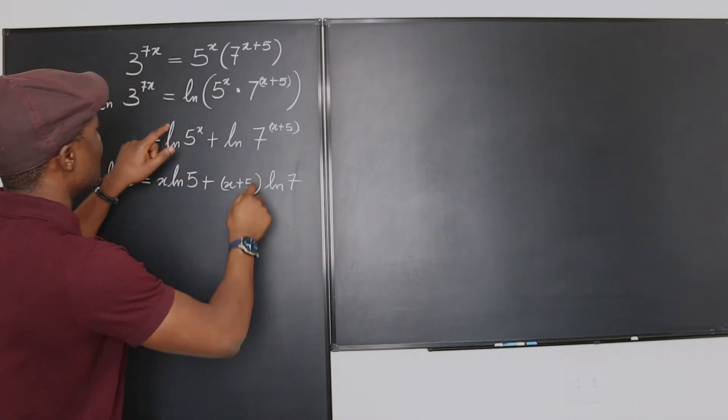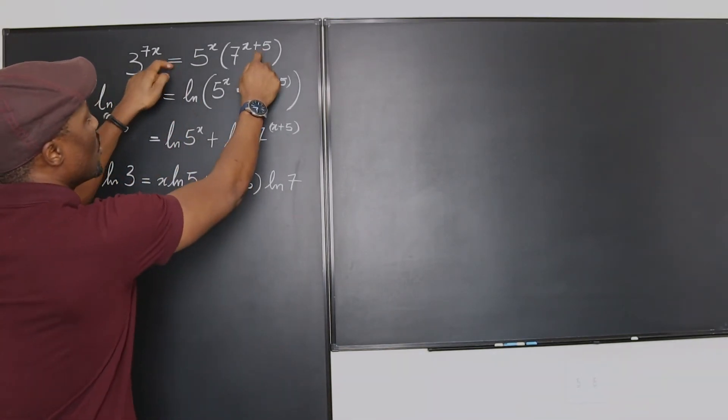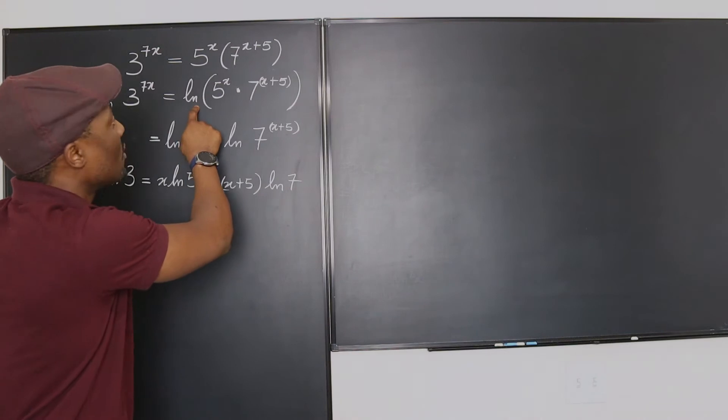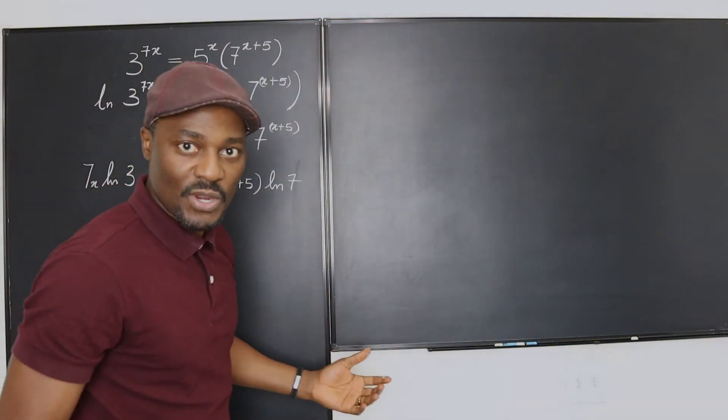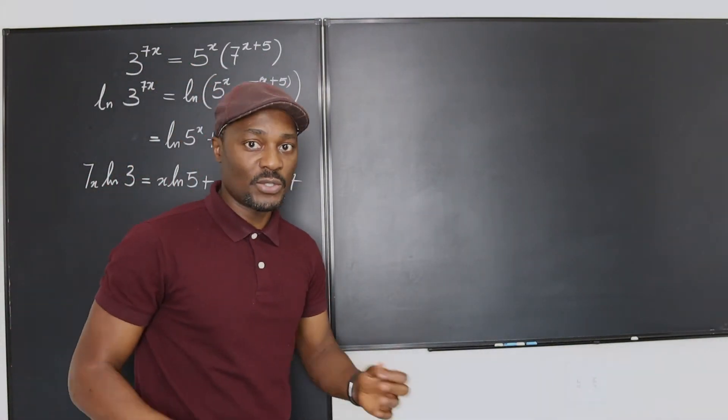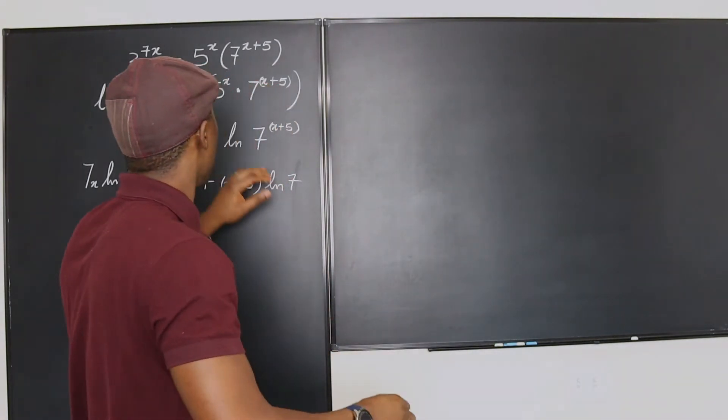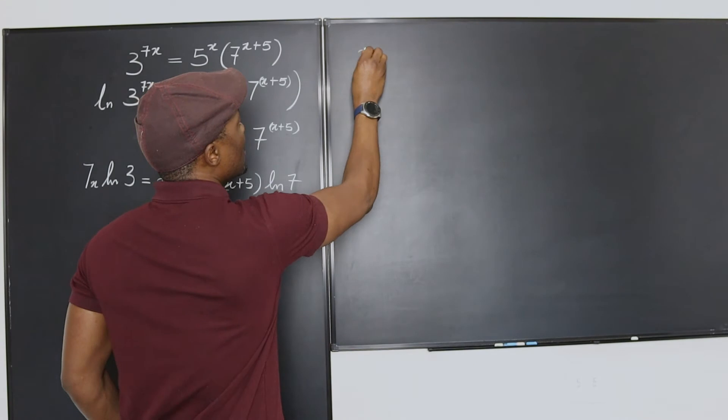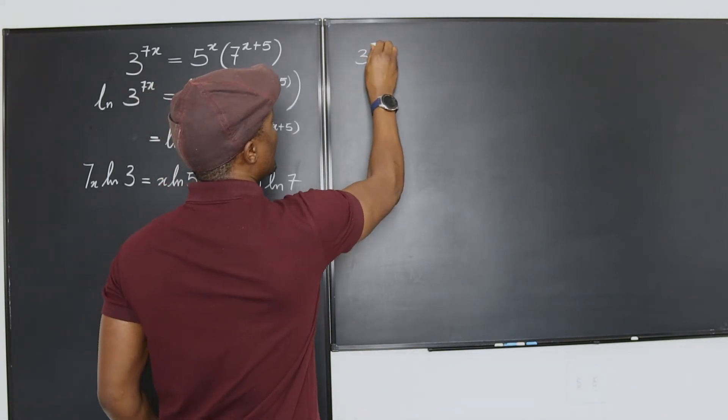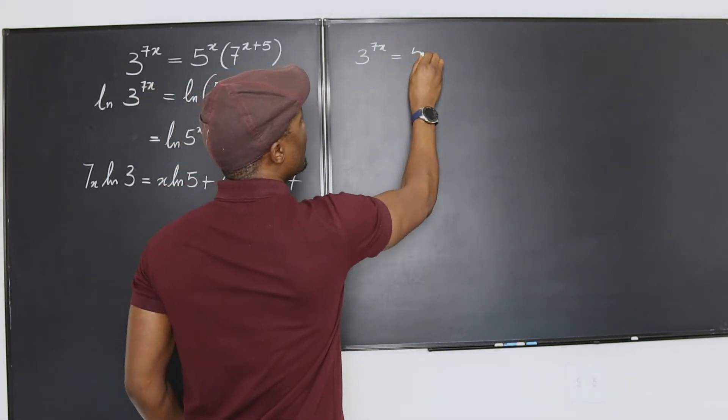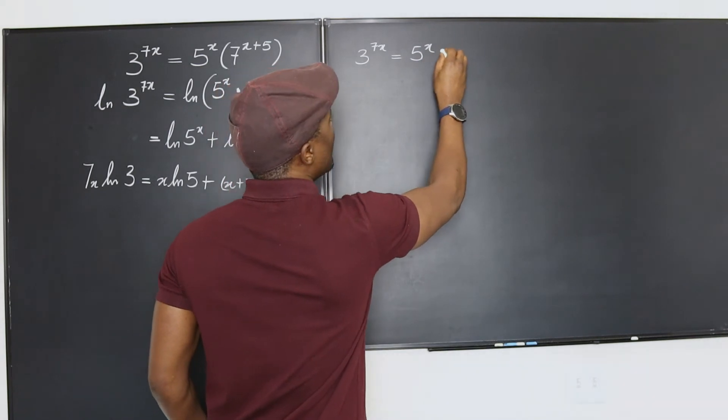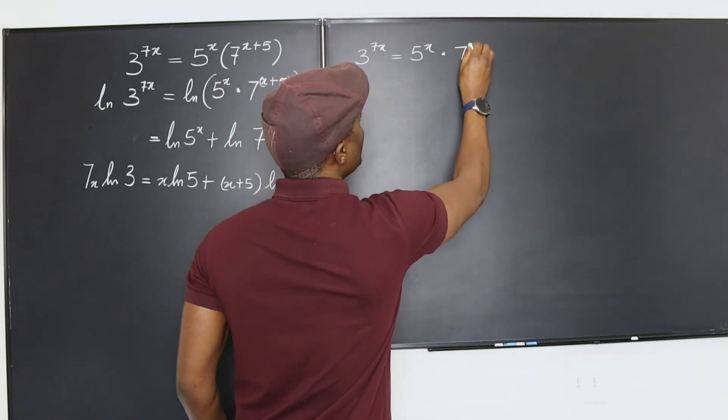So, let's say from this line here, we did not introduce the natural log. We just decided to solve this as if we're trying to solve exponential equations without introducing natural logarithms or any kind of logarithm. Now, what you have will be 3 to the 7x will be equal to 5 to the x multiplied by 7 to the x.